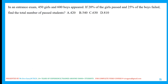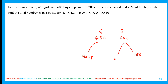In an entrance examination, 450 girls and 600 boys appeared. 20% of the girls passed — that means 90 girls passed. 25% of the boys failed — meaning 150 boys failed, so 450 boys passed. Total passed = 450 + 90 = 540.